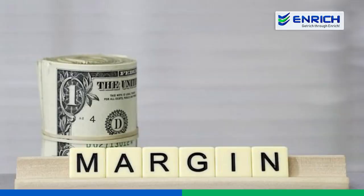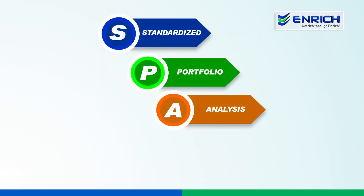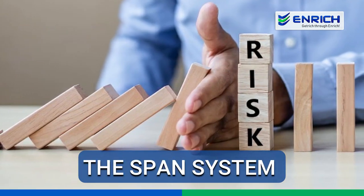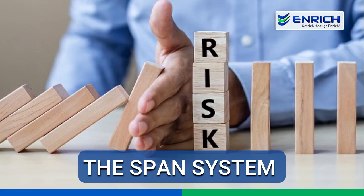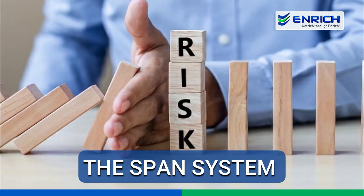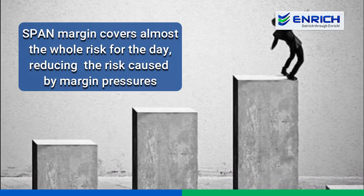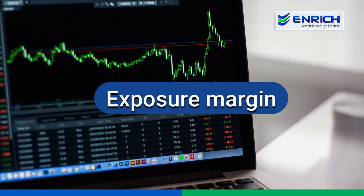So what is span? Span margin is the initial or minimum margin that is mandatory and fixed by the exchanges in the F&O segment. This margin calculation is done using a software called SPAN, which stands for Standard Portfolio Analysis of Risk. The SPAN system uses strike prices, risk-free interest rates, changes in prices of the underlying securities, changes in volatility, and the time value to estimate unexpected moves in the stocks. For the exchanges, span margin covers almost the whole risk for the day, reducing the risk caused by margin pressures.